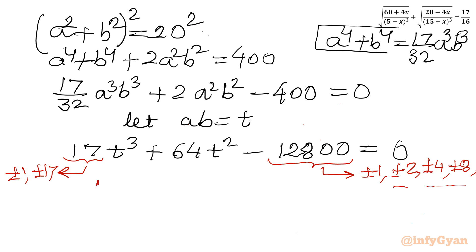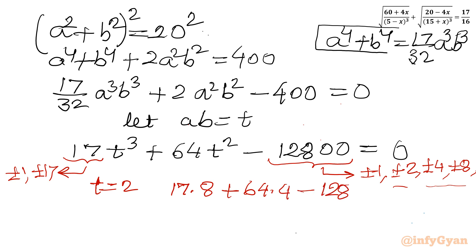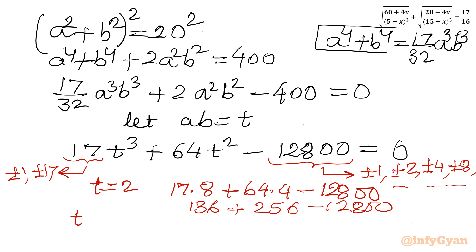So let me apply t equal to 2: 17 times 8 plus 64 times 4 minus 12,800. This is 136 plus 256, no it won't work. If I apply t equal to 4 also it won't, because 12,800 is a big number. Let us check for t equal to 8: 17 times 8 cubed plus 64 times 64 minus 12,800. We can write 64 times 200. Now we can cancel 64, or divide by 64, so here only 8 is left. Now this is 136 plus 200 minus 200. Yes, 200 minus 200, it is giving us RHS 0. That means t equal to 8 is our base solution.